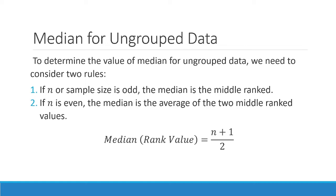If the sample size is odd — for example, five samples — you count to the third value, and that third measurement in the data array is the median. If n is even, the median is the average of the two middle rank values. For example, if you have: 2, 4, 4, 5, 6, 7 — that has an n of six — the middle falls between the third and fourth values.